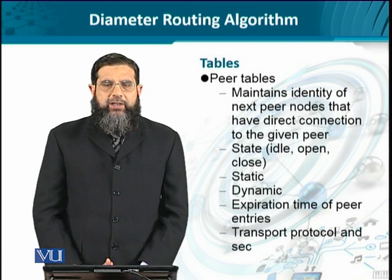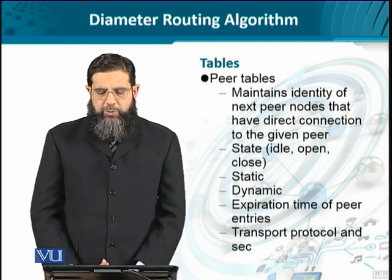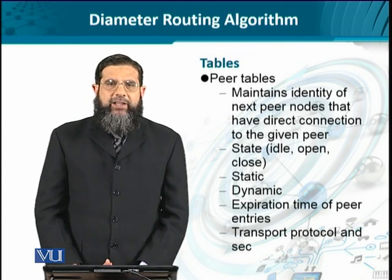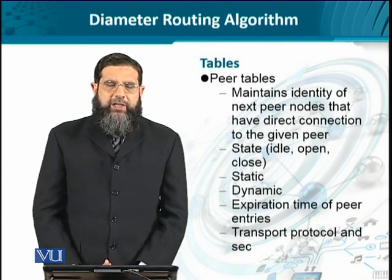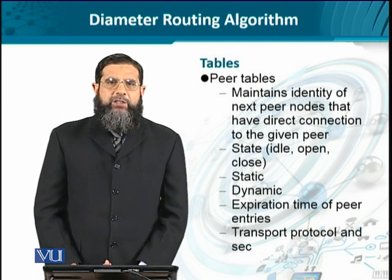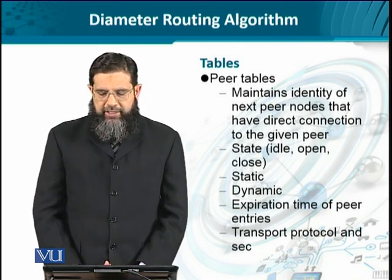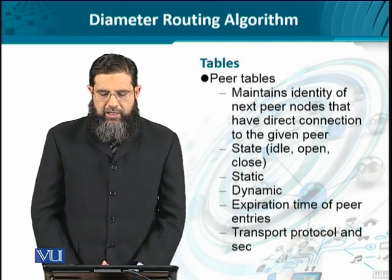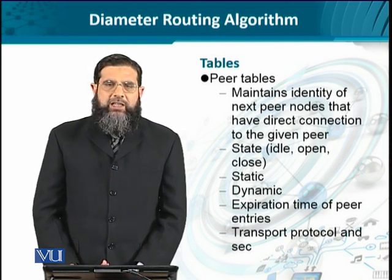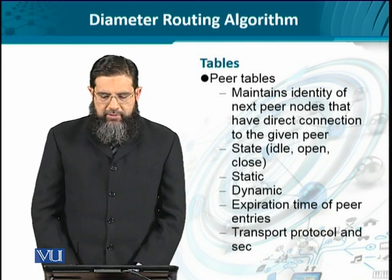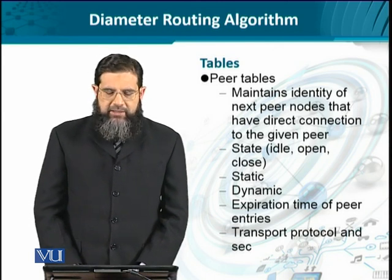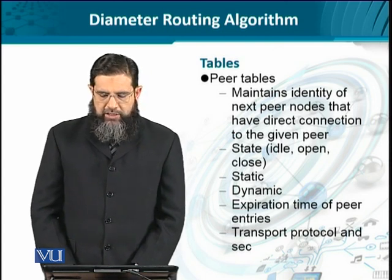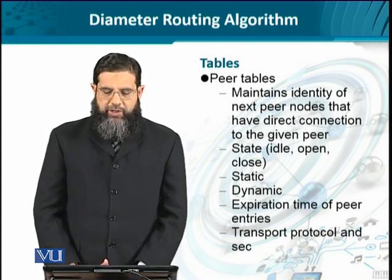There are essentially two kinds of tables. The first one is known as the peer table. It maintains the identity of each peer and keeps an updated list of all its neighbors connected to this particular peer. The information about the peers available on this table includes the current state of the peer — whether it is up, down, or not functioning at the moment.